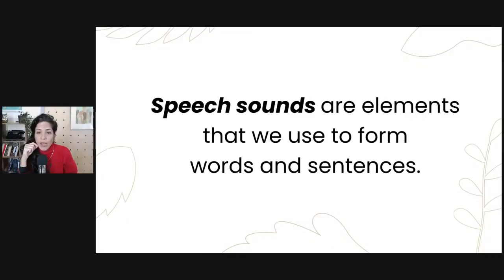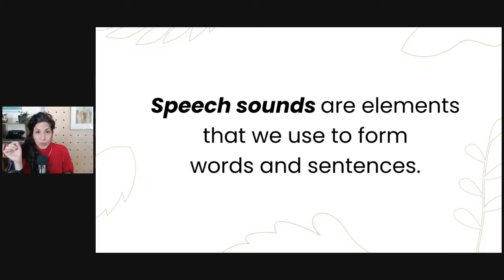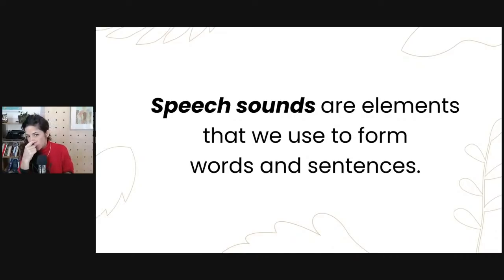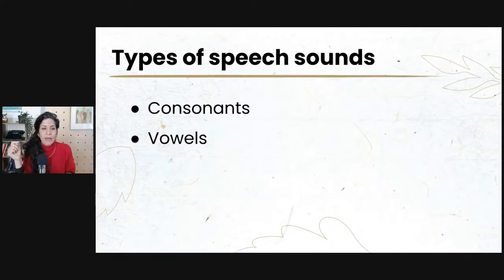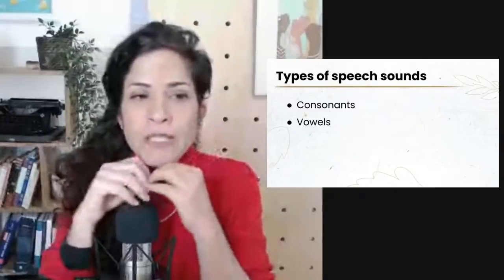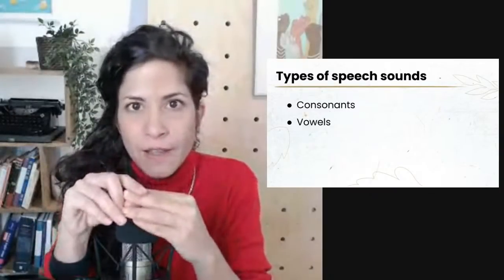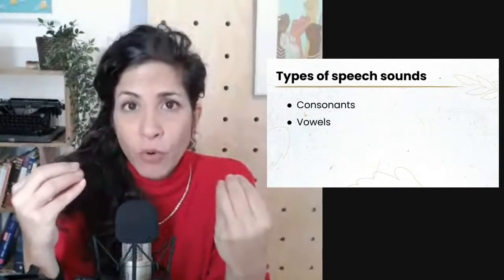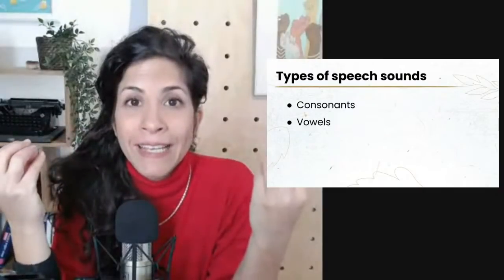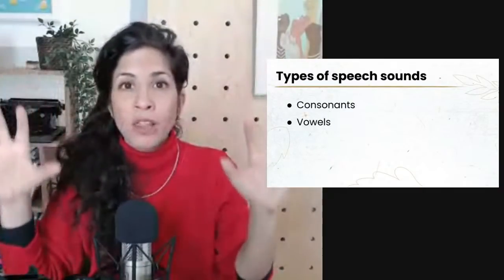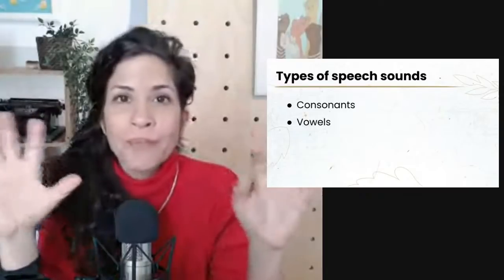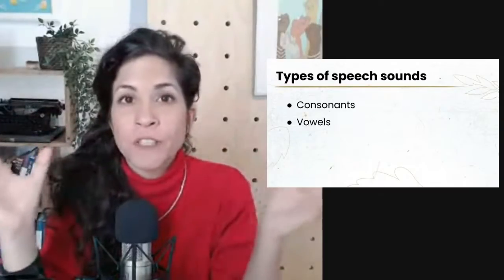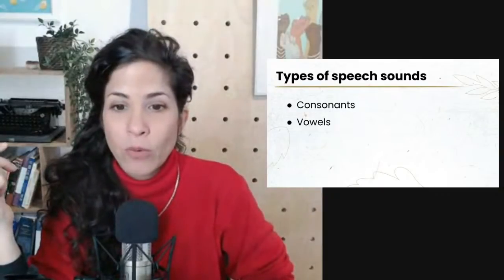For all of you who wrote no and you're not sure what the difference is between production and perception, stay tuned because it's going to be really important and really help you when it comes to understanding English pronunciation. The types of speech sounds that we have are consonants and vowels. We have those in any given language. We take all the sounds that the human mouth can make and divide them into two types: consonants and vowels.